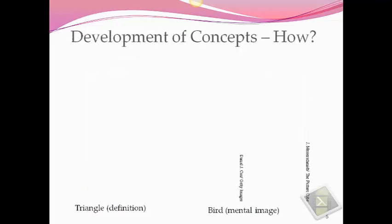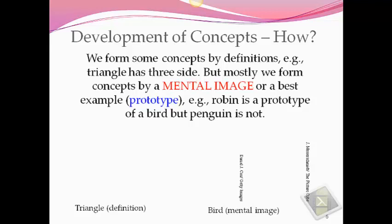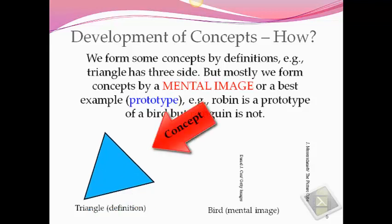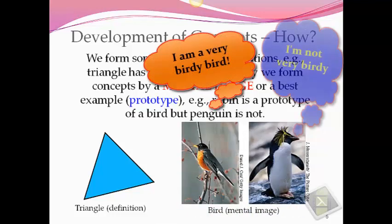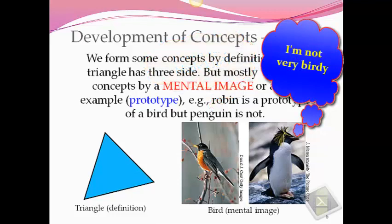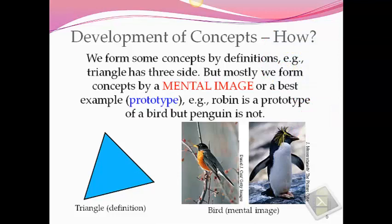How do we develop our concepts? Basically, we form many of our concepts by definitions — examples of concepts we try to learn in school, like a triangle has three sides. But mostly we form concepts by mental images or best-fit examples, which we call prototypes. For example, if we were talking about birds, many people in this part of the country would picture a robin — that's a prototype of bird, a best-fit example. But a penguin is not; a penguin doesn't fit most of the similar features we think of when we think of birds. Maybe in some parts of the world a penguin would be a prototype. We can also use mental images and definitions simultaneously.